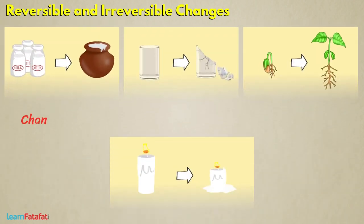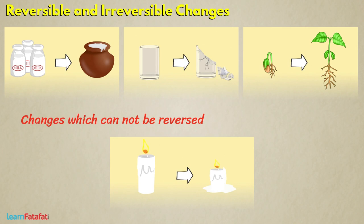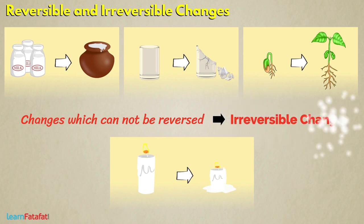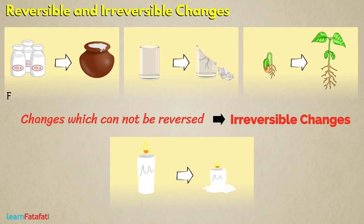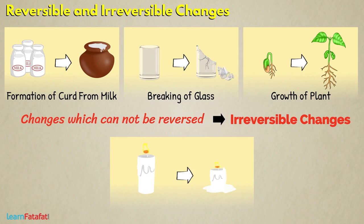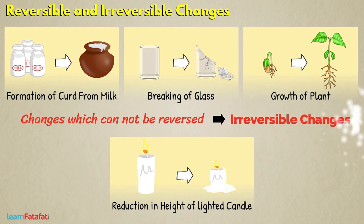There are other changes which cannot be reversed. That is, changes are permanent and cannot be undone. Such changes are called irreversible changes. For example, formation of curd from milk, breaking of glass, growth of plant, reduction in height of a lighted candle, etc. Such changes are irreversible changes.